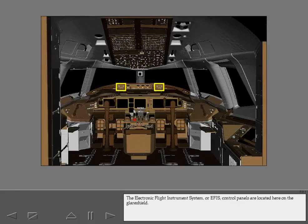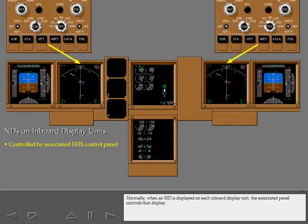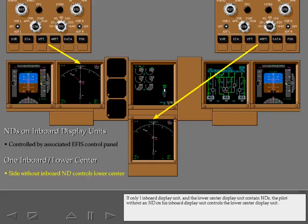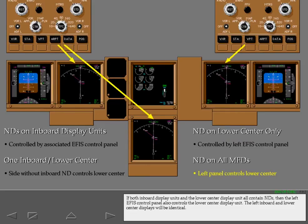The electronic flight instrument system, or EFIS, control panels are located here on the glare shield. Normally, when an ND is displayed on each inboard display unit, the associated panel controls that display. If only one inboard display unit and the lower center display unit contain NDs, the pilot without an ND on his inboard display unit controls the lower center display unit. If neither inboard display unit contains an ND but the lower center does, then the left EFIS control panel controls the display. If both inboard display units and the lower center display unit all contain NDs, the left EFIS control panel also controls the lower center display unit, and the left inboard and lower center displays will be identical.